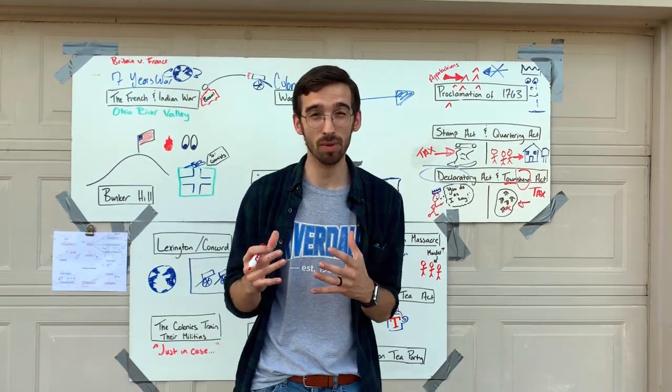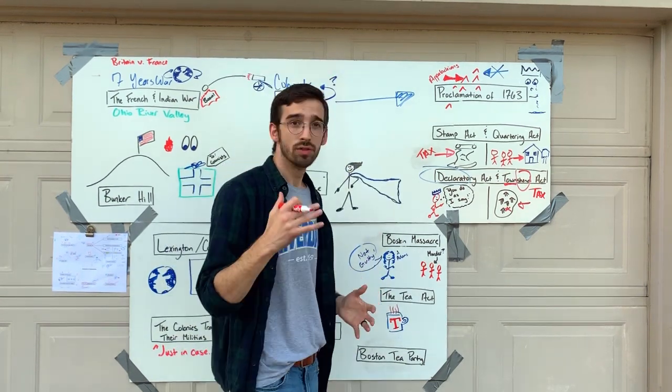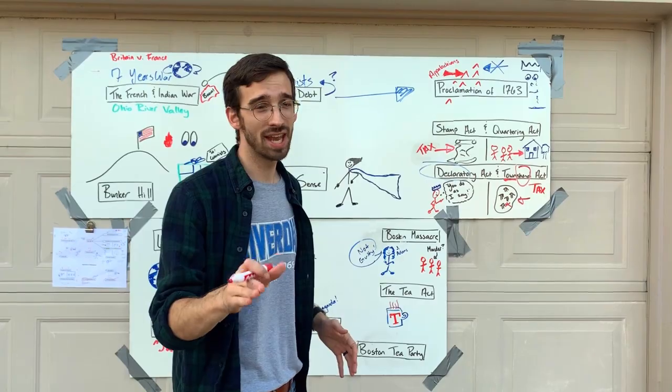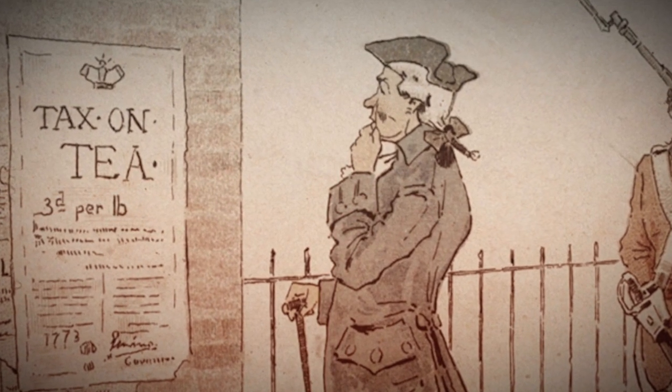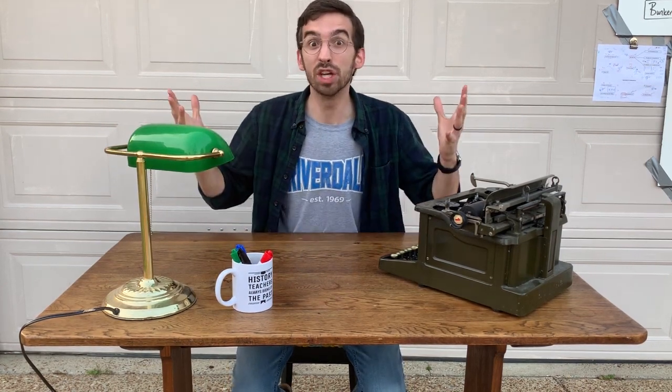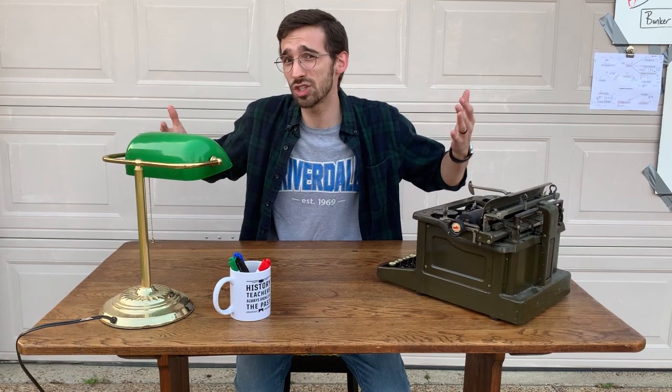But that doesn't solve the problem of tension in the colonies. So the British government passes another tax — the Tea Act. The Tea Act is probably the most reasonable of all the taxes, but at this point the colonists are so mad it really didn't matter what the tax looked like. The Tea Act actually lowers the price of tea by giving a monopoly on tea to one British company — the East India Company — so all the tea the colonists buy comes from the East India Company, but at a lower price.